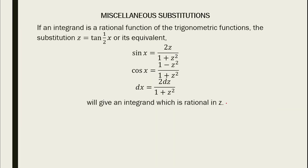So we have here miscellaneous substitutions. If the integrand is a rational function of trigonometric functions, we could make use of these substitutions, or the value for our z. For sine x, this is the value for our sine x, cos x, dx, and this will give an integrand which is a rational z.